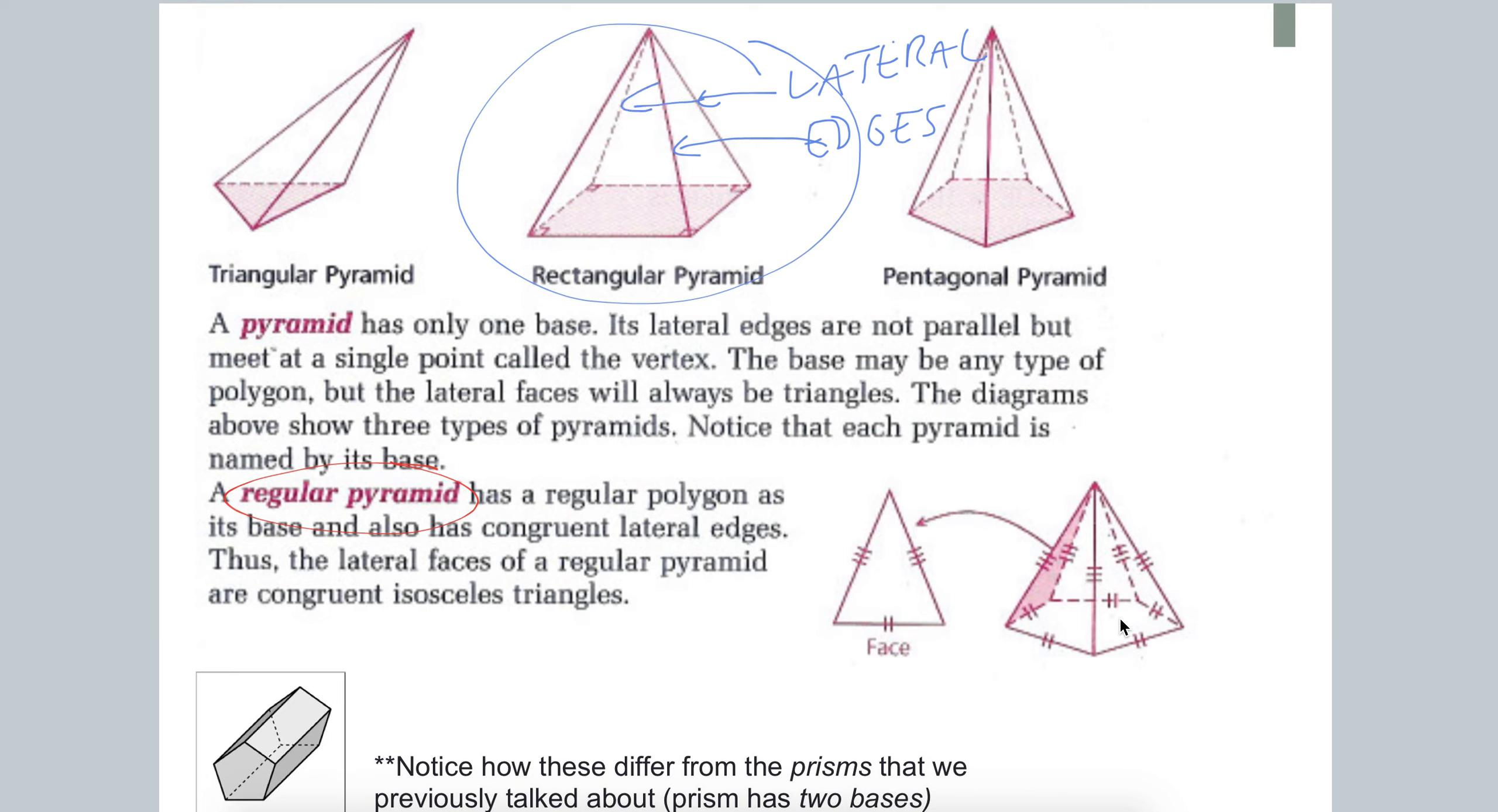So same thing here, and here. So we call those lateral edges. Another important thing to keep in mind is what we call the slant height. So the slant height is, if you draw perpendicular from the top of the pyramid,